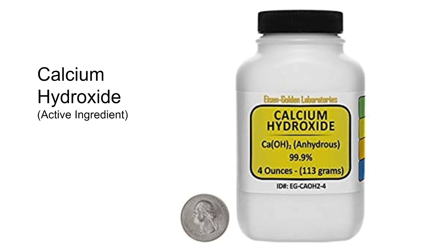We use calcium hydroxide to give pickles an extra crunch, to add nutritional value to fruit juice, or to process corn and sugar before it comes to our grocery stores.